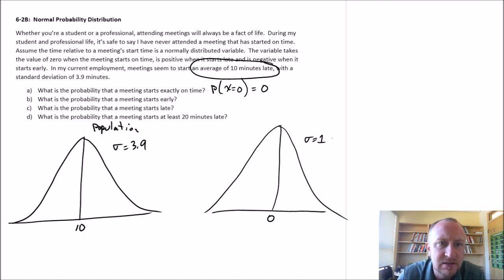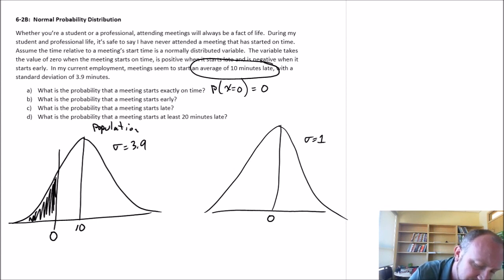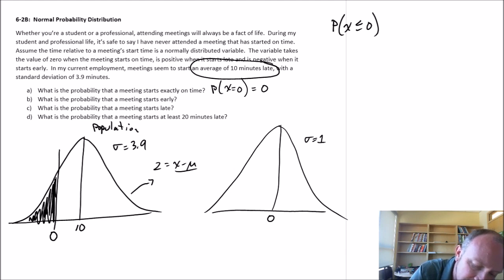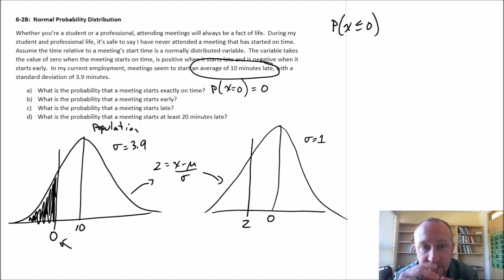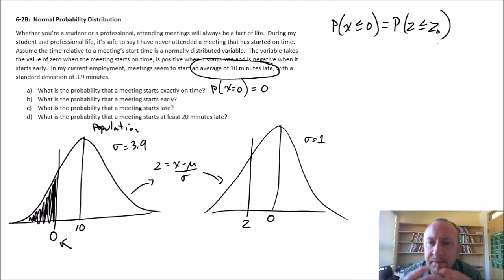What we need to do is translate a value from one distribution into another. Looking at part B, the probability that a meeting starts early — well, if on average it starts 10 minutes late, then the value of zero is somewhere to the left. The probability that it starts early is the area under the curve to the left of zero — so the probability that X is less than or equal to zero. In order to calculate that probability, we need to translate this into our standard normal distribution and find the Z-score that corresponds with that value of interest.